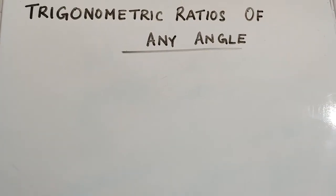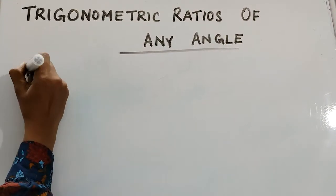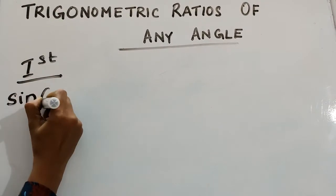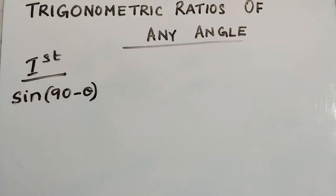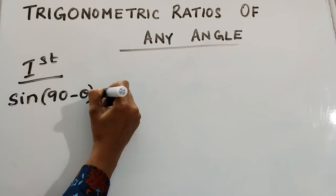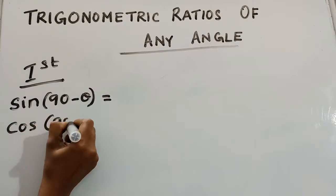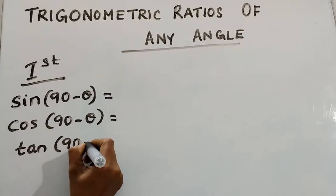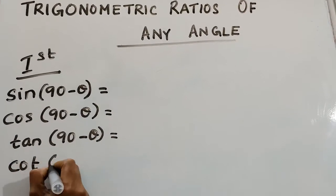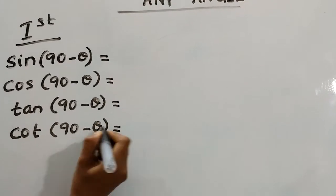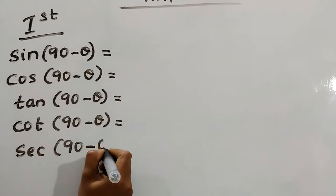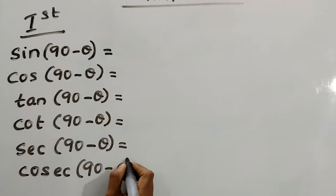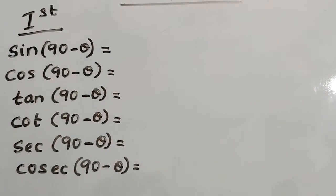In each quadrant we are going to find the trigonometric ratios. First quadrant, first angle: sine(90 − θ), cos(90 − θ), tan(90 − θ), cot(90 − θ), and cosec(90 − θ). We need to find these. We know that in the first quadrant all trigonometric ratios are positive.